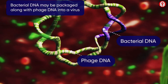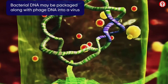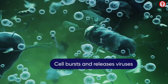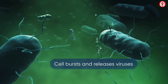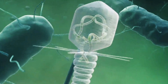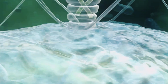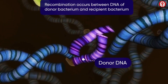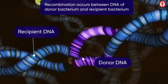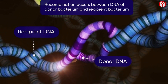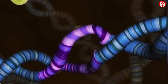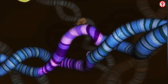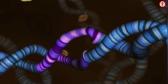Sometimes, the bacterial DNA can be packaged into a virus along with phage DNA. The cell undergoes lysis, releasing viruses. The phage carrying the bacterial DNA infects another cell. Recombination between the donor and the recipient DNA can occur. The bacteriophage thus brings about genetic changes in bacteria which survive the phage attack.